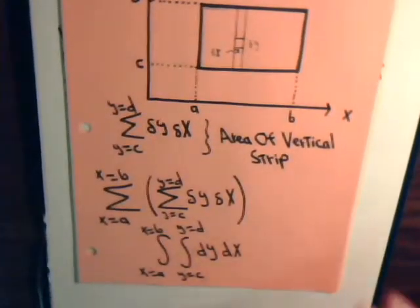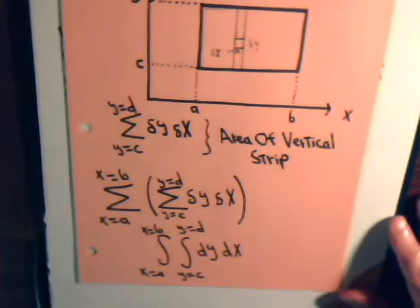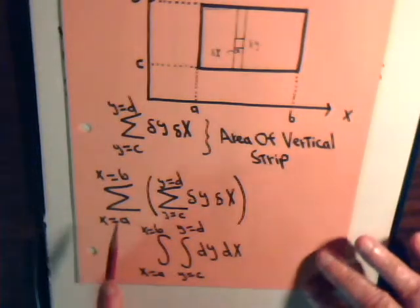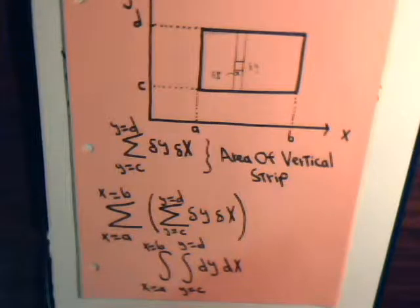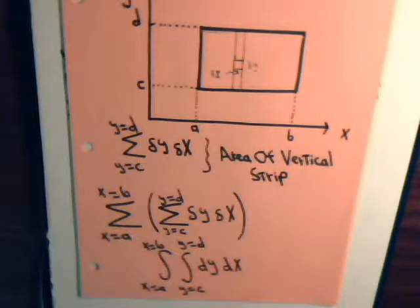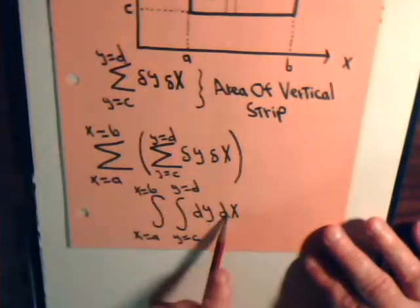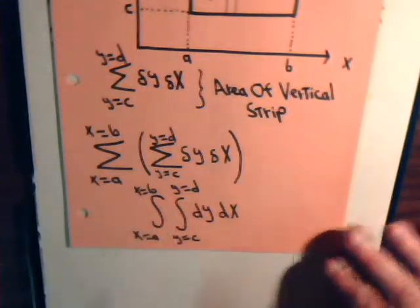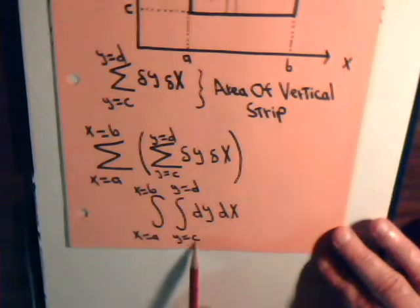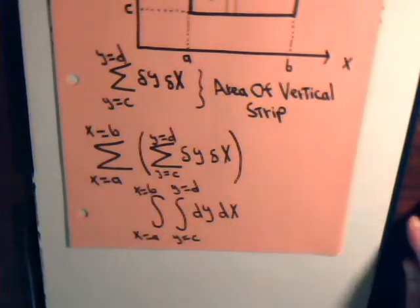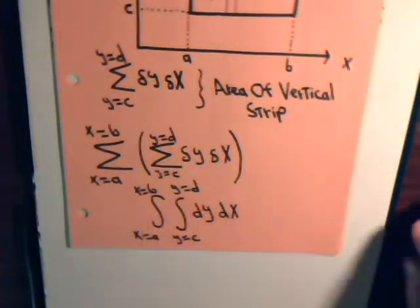Here's a vertical strip — that's the area of it. Now add the area of all those vertical strips from x equals a to x equals b. In calculus, we don't work with delta x's and delta y's; we have infinitesimally small differentials dy dx. Our summation signs become integral signs: y goes from c to d, x goes from a to b, giving us this iterated integral. We perform the inner integral first, then the outer integral.